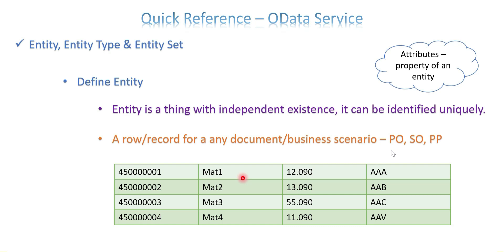Attributes describe things like the data type, the data size, and whether there are decimal places or not. Those are considered properties of an entity — we consider them as attributes.